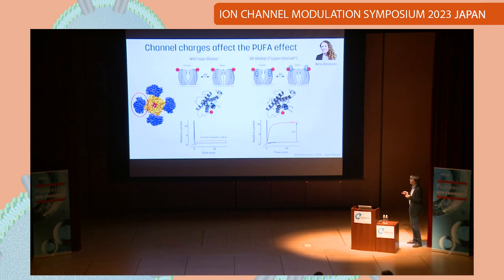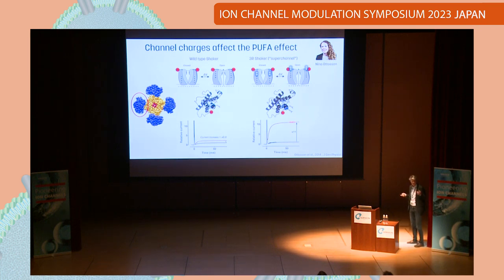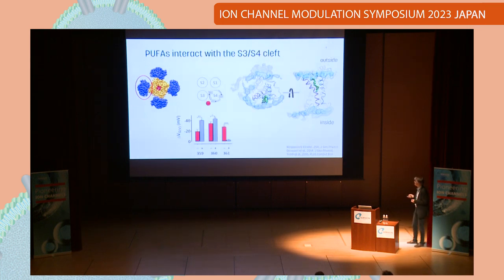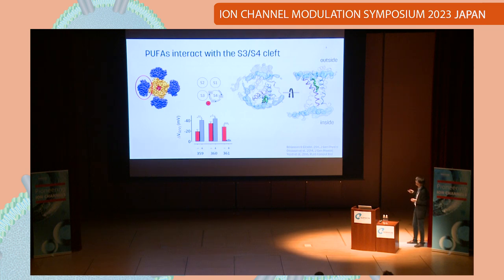We found that the number and position of charges on top of the voltage sensor S4 were critical for the effect. When we added two extra charges on top of the voltage sensor, we could increase the effect enormously — we call this the super channel. This has been a tool in our attempts to find new, better compounds. We also identified the binding site of these polyunsaturated fatty acids, finding they most likely bind between segment four and segment three from the lipid bilayer at the extracellular end of the channel.